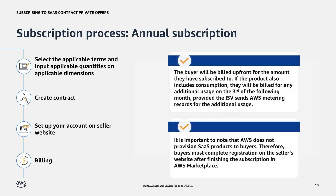It is important to note that AWS does not provision SaaS products to buyers. Therefore, buyers must complete registration on the seller's website after finishing the subscription in AWS Marketplace. The buyer will be billed upfront for the amount they have subscribed to. If the product also includes consumption, they will be billed for any additional usage on the third of the following month, provided the ISV sends AWS metering records for the additional usage.